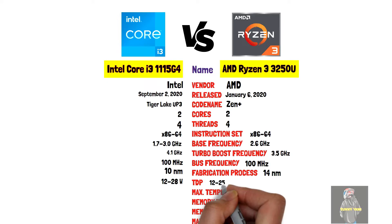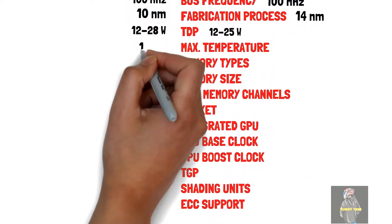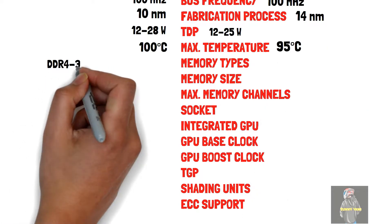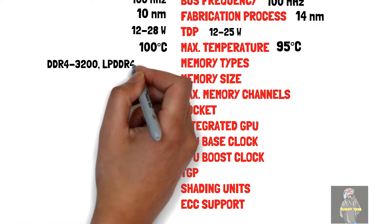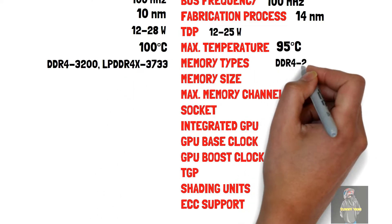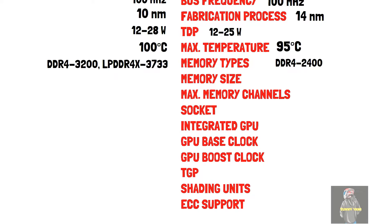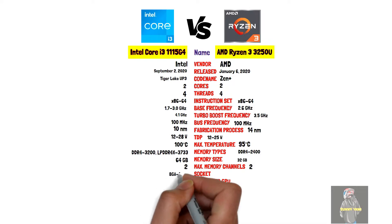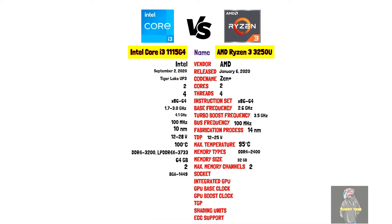TDP: 12–25 Watt versus 12–28 Watt. Max temperature: 100°C versus 95°C. Memory support: DDR4-3200 / LPDDR4-X 3733 versus DDR4-2400. Max memory: 64 GB versus 32 GB. Channels: 2 versus 2. Socket: BGA 1449 for both.